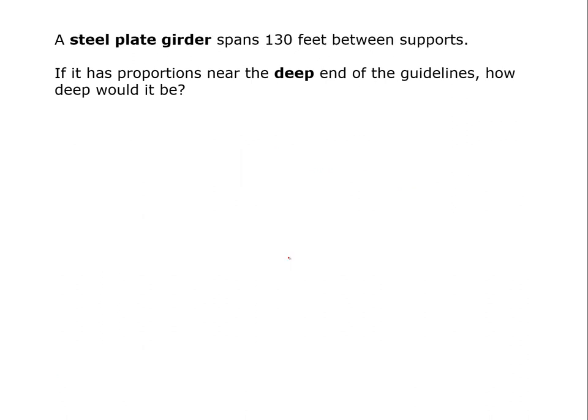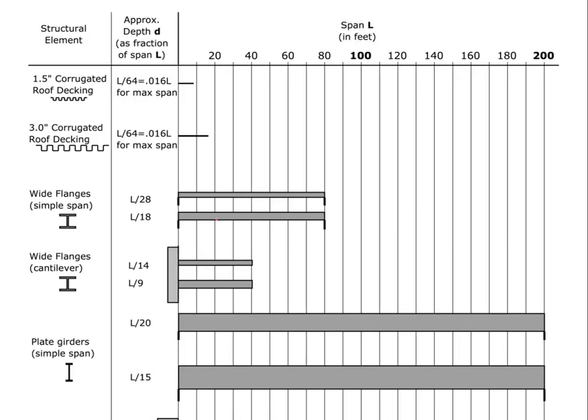Okay, so let's take another example. A steel plate girder spans 130 feet between supports. If it has proportions near the deep end of the guidelines, how deep would it be? So we come down here and this is plate girders. We're going to pick the deep end, which is L over 15. And by the way, you'll notice we have a certain set of proportions here for wide flanges, and then we have deeper proportions. So instead of L over 28, we got L over 20. Instead of L over 18, we got L over 15. And the reason for that is that plate girders inherently lend themselves to being as deep as we want them to be.